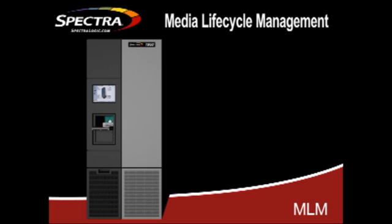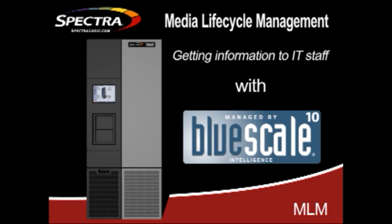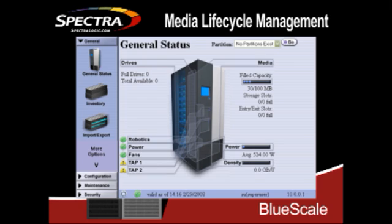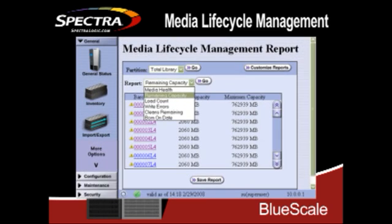Recording this information is only one portion of what makes media lifecycle management possible. The most important aspect is getting the information into the hands of IT staff — this is where BlueScale reporting comes in. Under the media section, you can get a quick media capacity view in each of your partitions. By rolling over the media link, you can even get a visual of the configuration of media inside the tape library. To access the media lifecycle reports, simply select the media link, which brings up the media lifecycle report screen. If you select the report bar, you'll see six different ways to view the media.